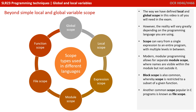Block scope is also common, whereby the scope is restricted to a subset of a given function. Yet another scope, popular in C, is known as file scope. So this is another great example in computer science where the reality of the situation is often different to the simple abstracted situation we present to you for your exam.